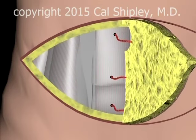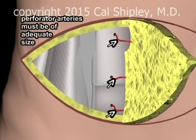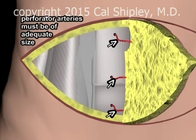The deep inferior epigastric perforator arteries are then inspected. It is critical to the success of the DIEP procedure that the perforator arteries be of adequate size. Perforator artery size will vary from individual to individual, and undersized arteries preclude the use of this technique. Individuals with undersized perforator arteries may be candidates for the alternate TRAM breast reconstruction technique. Please see my presentation in this library for more information on the TRAM technique.